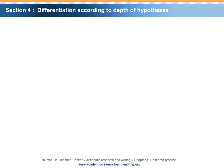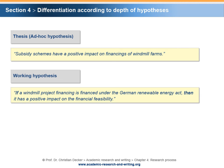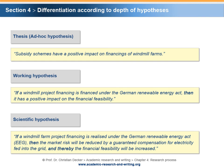The differences in the depth of a hypothesis can be demonstrated by the following examples. A thesis or ad hoc hypothesis would be: subsidy schemes have a positive impact on financings of windmill farms. A working hypothesis would be: if a windmill project financing is financed under the German Renewable Energy Act, then it has a positive impact on the financial feasibility. A scientific hypothesis would be: if a windmill farm project financing is realized under the German Renewable Energy Act (EEG), then the market risk will be reduced by a guaranteed compensation for electricity fed into the grid, and thereby the financial feasibility will be increased.